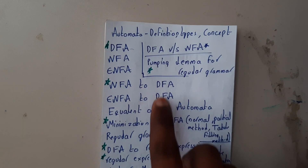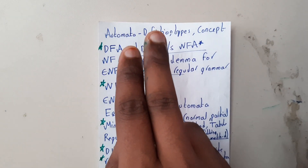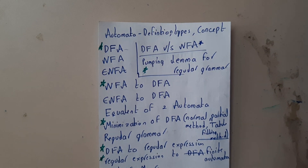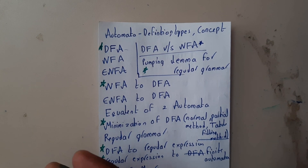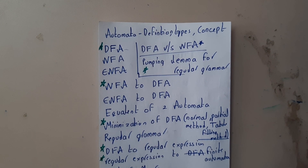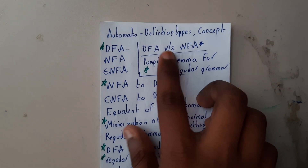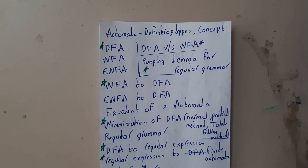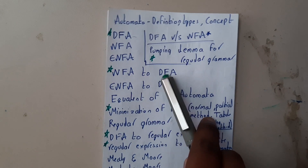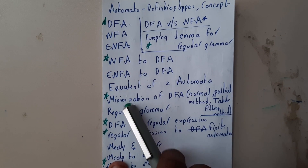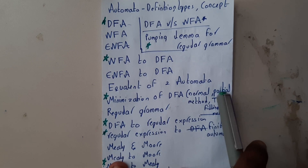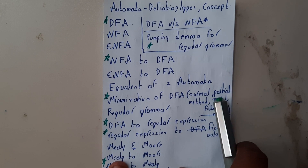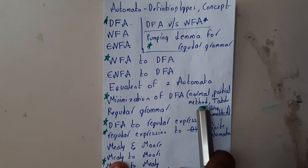For two-mark questions, practice your definitions, expressions, and basic things — those will only be asked. For LAQs, you need to concentrate more on DFA conversions and minimization. There are three methods, so go through all three, and the most commonly asked one is the partial method.